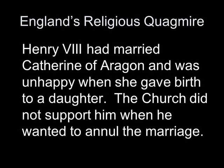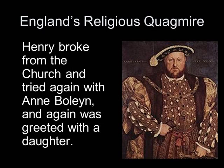Luther's ideas also spread to England, when King Henry VIII saw it politically convenient to break with the Catholic Church, despite the fact that he really didn't agree with any of Luther's theology or the reasons behind his religion. Henry VIII had married Catherine of Aragon and was unhappy when she gave birth to a daughter and couldn't give him a son. So he asked the church to annul their marriage, and the church said no. Unwilling to accept no for an answer, Henry broke from the church and created his own church — the Church of England — appointing himself as its head instead of the Pope. He then annulled his marriage, tried again with a lady named Anne Boleyn, and again he was given a daughter.